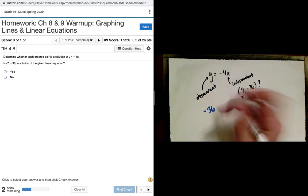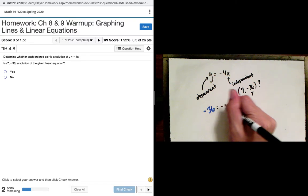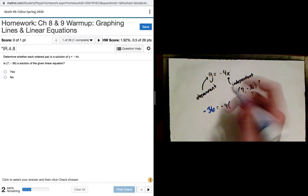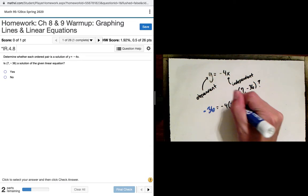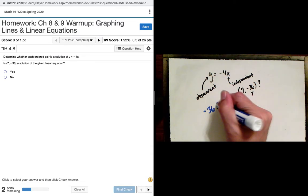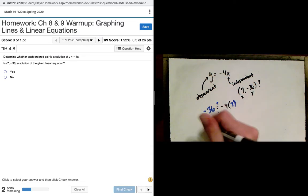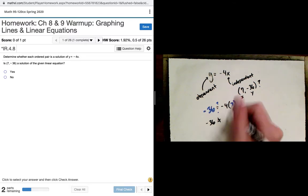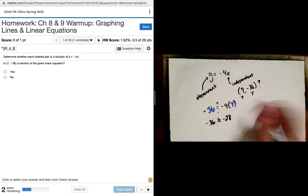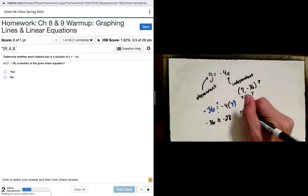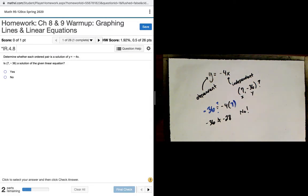Negative 36 is equal to negative 4 times 7. Is this true? No, it's not. Negative 36 on the left-hand side is not equal to negative 28. So our answer to this question is no. No, the point 7 negative 36 does not fall on this line.